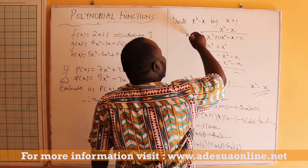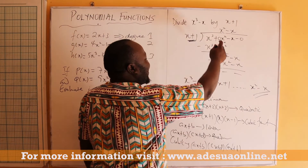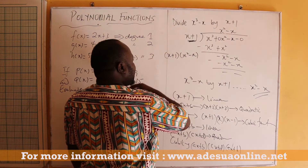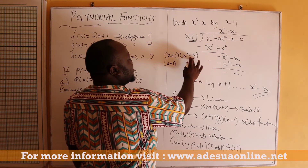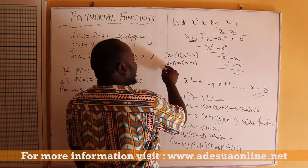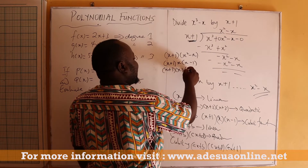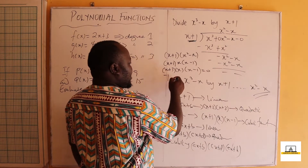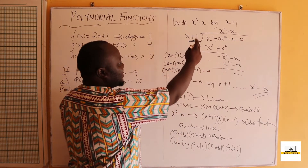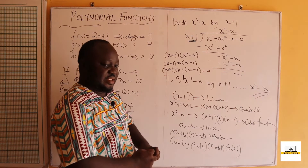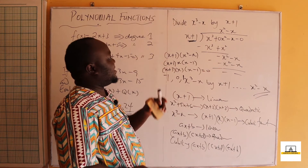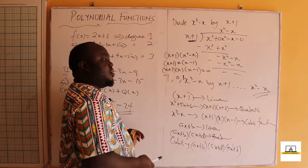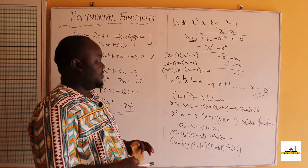For x³ - x, one factor is x + 1 (since it leaves remainder zero). The quotient x² - x factors as x(x - 1), giving three factors: (x + 1)(x)(x - 1). Setting each factor to zero, the zeros of x³ - x are x = -1, x = 0, and x = 1.